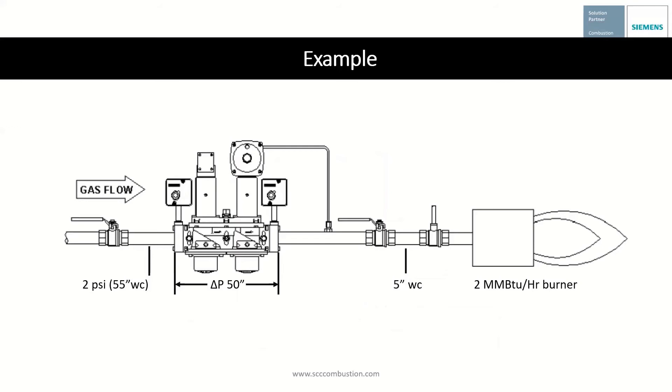For calculations by hand, we'll go through a short example. In this case, we have 2 psi inlet pressure and 5 inches water column gas pressure required at the burner. This gives us 50 inches water column of available pressure drop. The goal is to size the shutoff valve to take as much of the 50 inches water column available pressure without going over. We have here a 2 million BTU per hour burner.